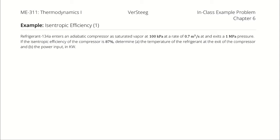R134A enters an adiabatic compressor as saturated vapor at 100 kilopascals at a rate of 0.7 cubic meters per second and exits at 1 megapascal pressure. If the isentropic efficiency of the compressor is 87%, determine first the temperature of the refrigerant at the exit of the compressor, and then the power input required to operate the actual compressor in kilowatts.